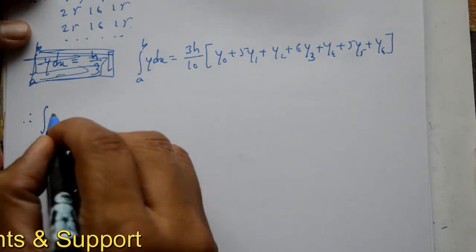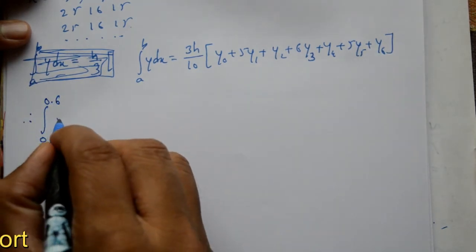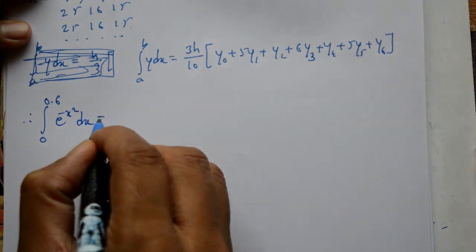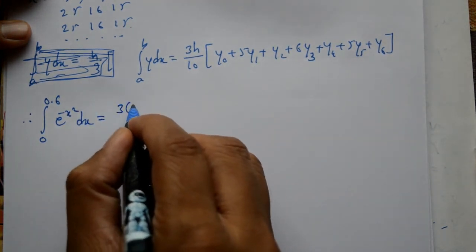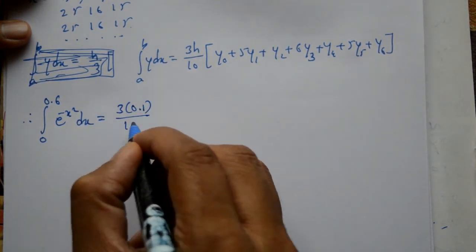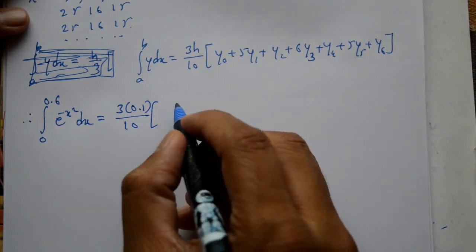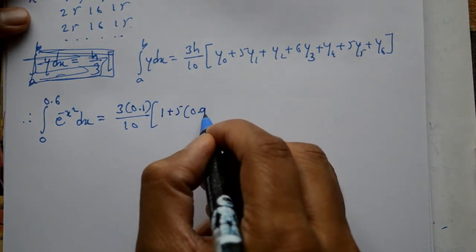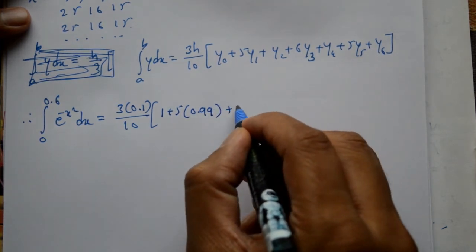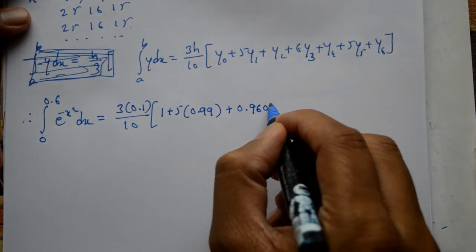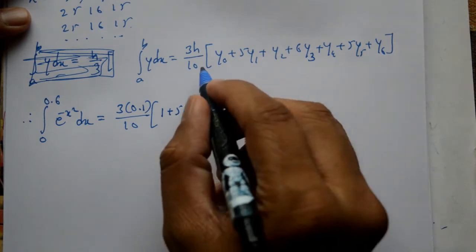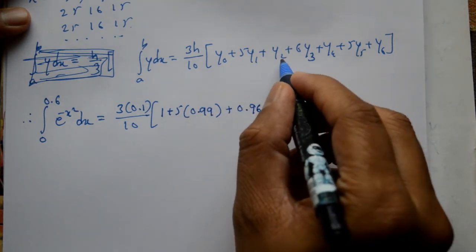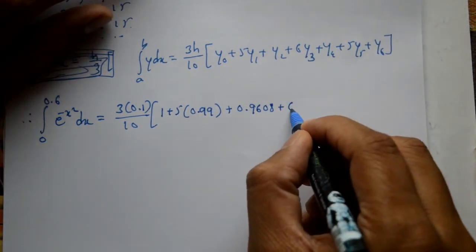Therefore, integration of 0 to 0.6 e to the power minus x square dx equals 3 into h which is 0.1, divided by 10, into: y naught is 1 plus 5 into y1 which is 0.99, plus y2 which is 0.9608.